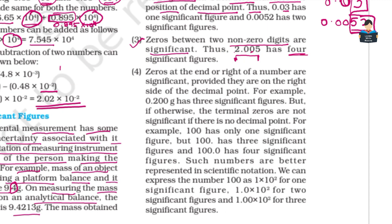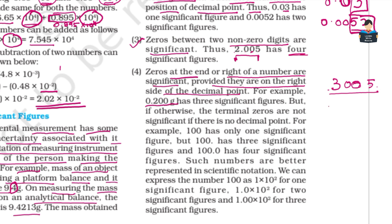Rule 4: Zeros at the end or right of a number are significant, provided they are on the right side of the decimal point. For example, 0.200 grams has three significant figures.